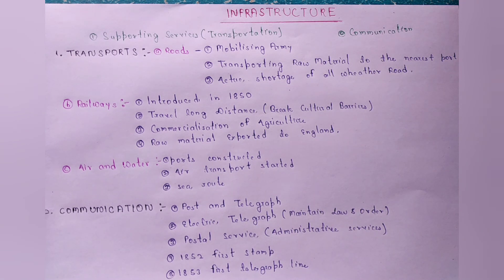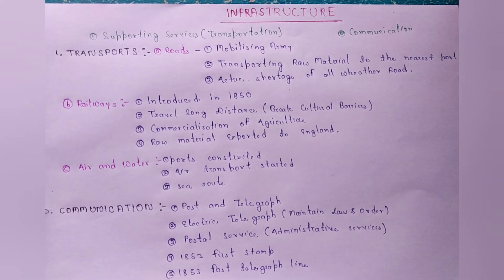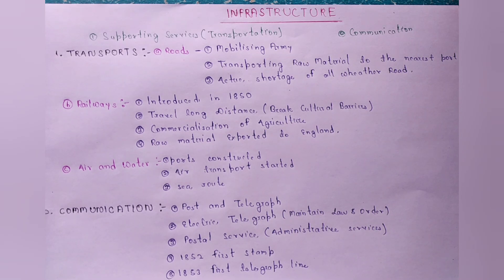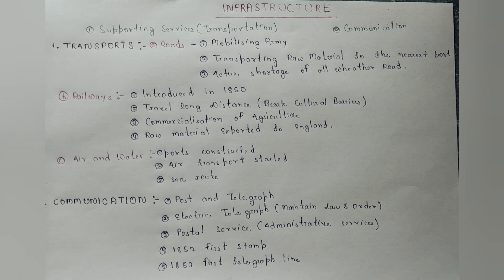Communication में post और telegraph का introduction किया गया। 1852 में पहला stamp introduce किया गया और 1853 में first telegraph line start हुई। Electric telegraph जो था वो law और order को maintain करने के लिए शुरू किया गया था, और postal services जो थी वो administrative services को maintain करने के लिए start की गई थी, ताकि British का administration ज़्यादा से ज़्यादा efficient हो सके और उनका control ज़्यादा से ज़्यादा हो सके।